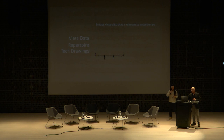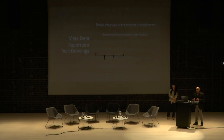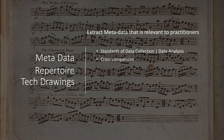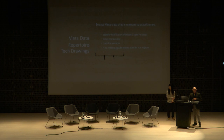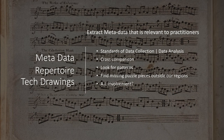When we lack physical evidence, like here in Finland, how can we make sure that it's really a bagpipe tune? There should be some kind of standardization of data collection and data analysis in order for it to be comparable, and it would allow for cross-comparison. We could then look for patterns and — especially interesting to me — find missing puzzle pieces outside our regions. And the question is: does this involve some kind of AI? Because sometimes we may be talking about massive sets of data.